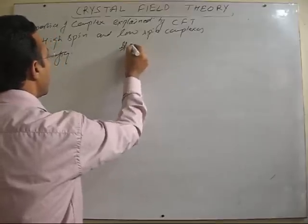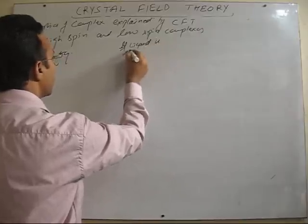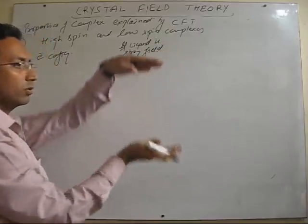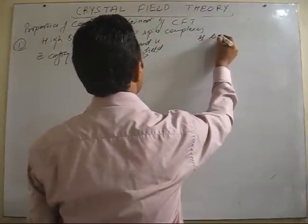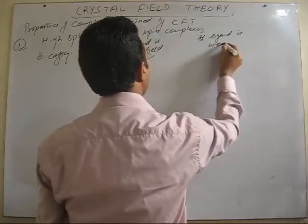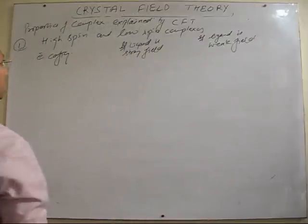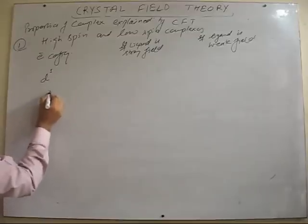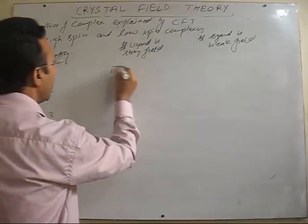If, case one, if ligand is strong field, that means low value of delta. Second case, if configuration, if the ligand is weak field. So, let me consider, if the configuration is D1 or D2, D3. Let's take the case of D1.